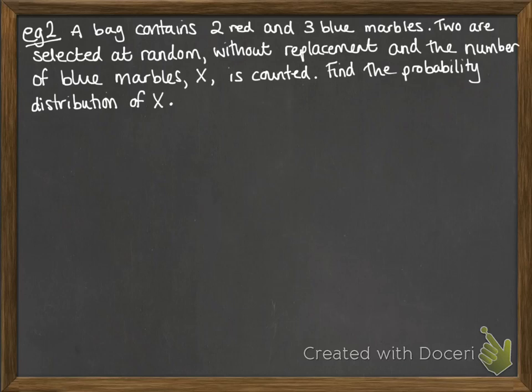Okay, so second example. A bag contains 2 red and 3 blue marbles. 2 of them are selected at random without replacement. And the number of blue marbles, X, is counted. Find the probability distribution of X. So, let's set ourselves up a table. And our values of x, so how many blue marbles could we get? We could either get none, 1, or 2. And we need to work out the probability of each of those happening.